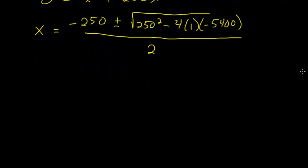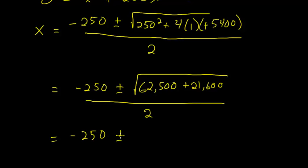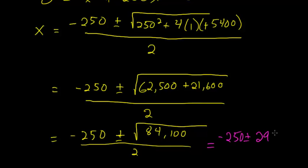And now we just have to simplify this. So we still have this minus 250 plus or minus square root, and notice that we have minus a negative here, so this is really just plus. And 250 squared is 62,500, and then we're adding 4 times 5,400, which is 21,600, all divided by 2 still. And again, this is equal to minus 250 plus or minus the square root of these two combined, which is 84,100, again all divided by 2. And the square root here simplifies to 290, so we have minus 250 plus or minus 290 all over 2.